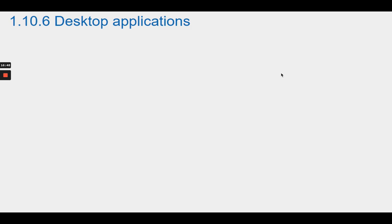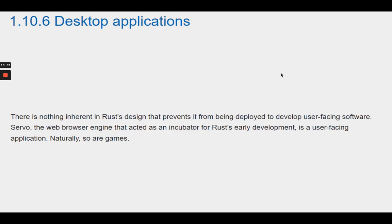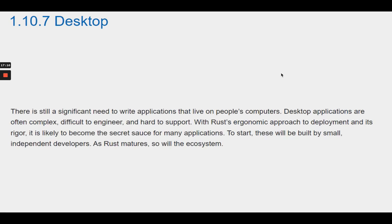Section 1.10.6 Desktop Applications. There is nothing inherent in Rust's design that prevents it from being deployed to develop user-facing software. Servo, the web browser engine that acted as an incubator for Rust's early development, is a user-facing application. Naturally, so are games. Section 1.10.7 Desktop. There is still a significant need to write applications that live on people's computers. Desktop applications are often complex, difficult to engineer, and hard to support.